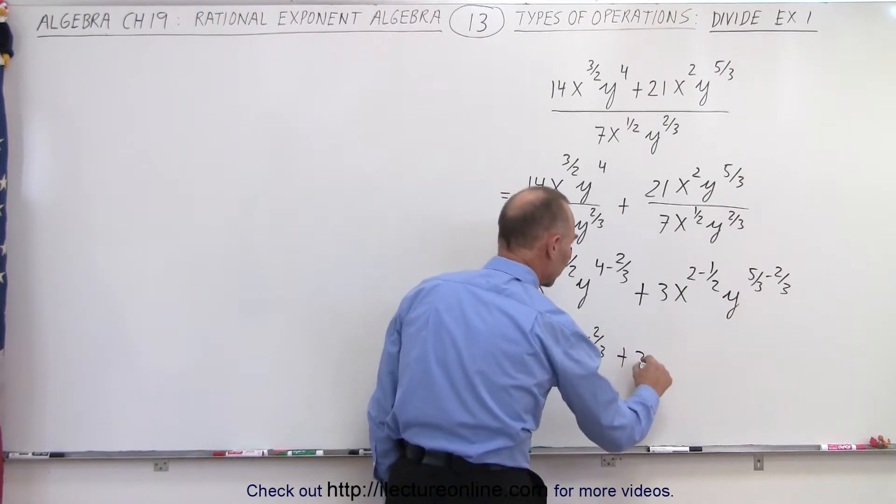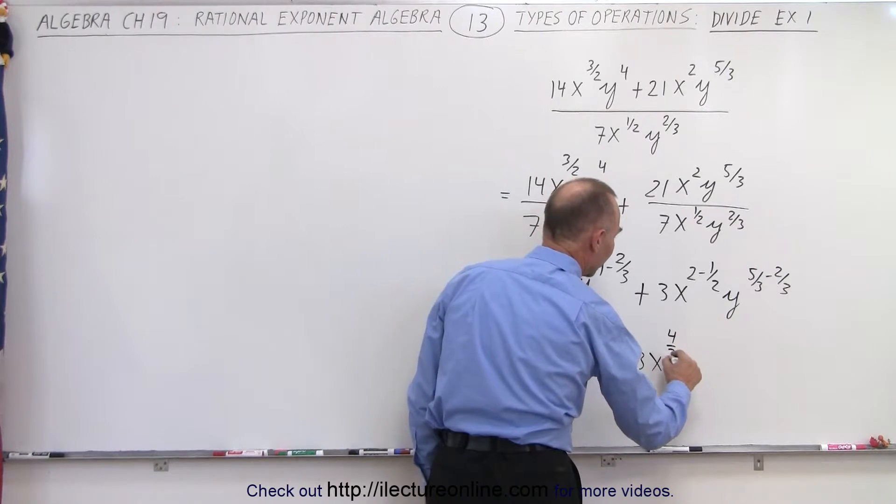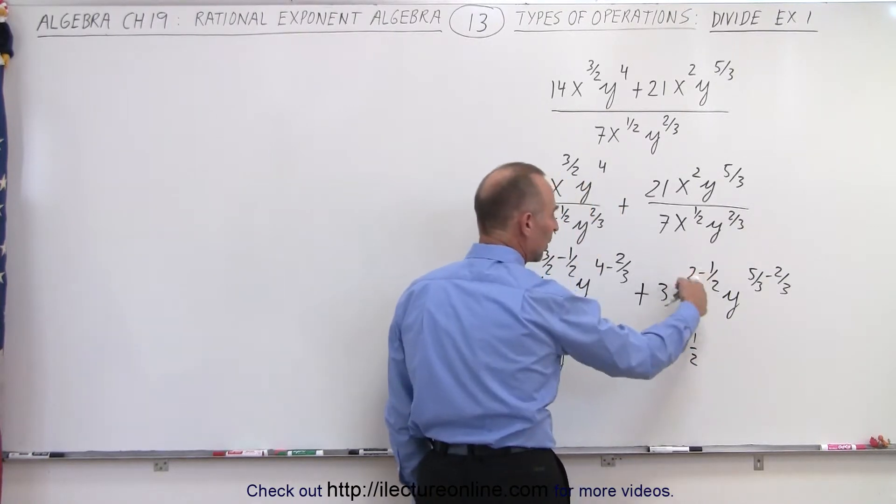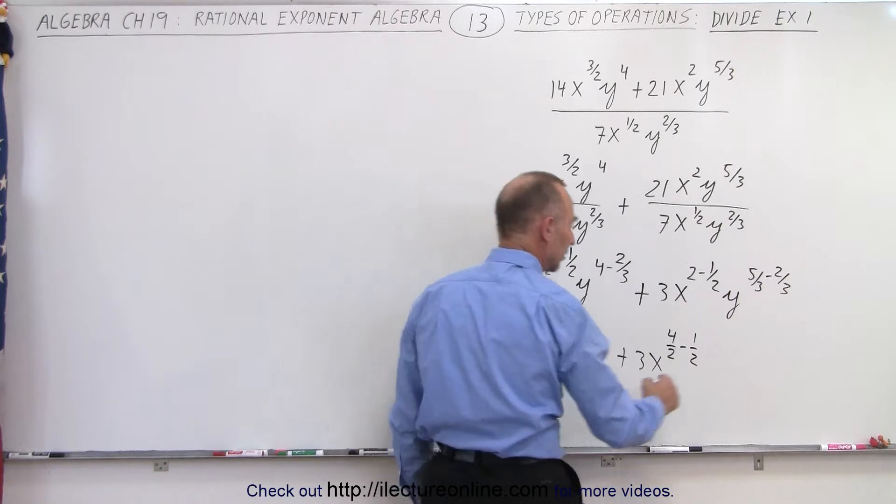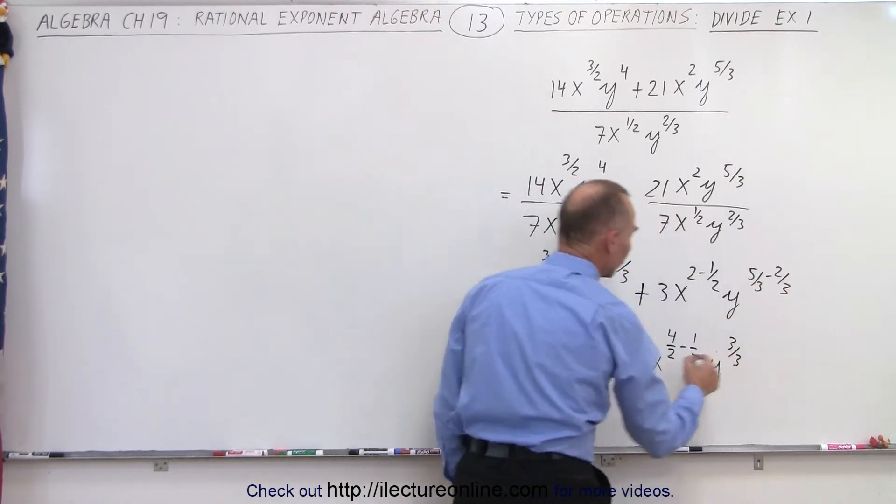And then we write this plus 3x^(3/2 - 1/2). So again, we rewrite the 2 so we have a common denominator. And we have y^(5 - 2), which is 3/3.